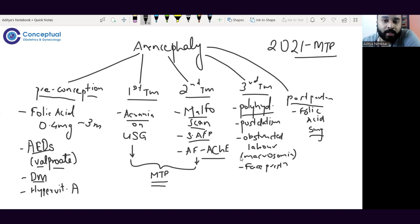The part of post-datism here is that this baby lacks a pituitary gland. The pituitary gland secretes ACTH, adrenocorticotropic hormone. The fetal body has a fetal clock which determines when labor should begin.